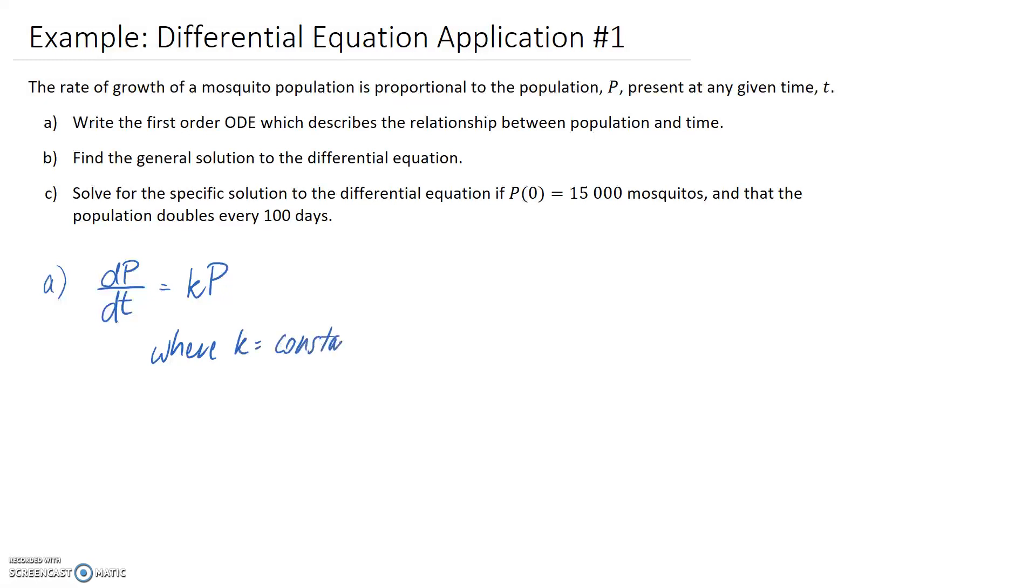The k is a constant of proportionality. This means the rate of growth is not directly equal to the population—it gets factored by some amount, which is what the k constant represents. It's just keeping everything proportional.